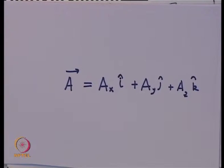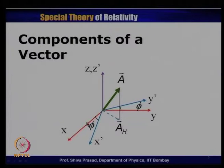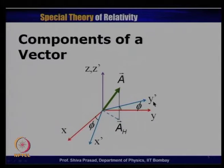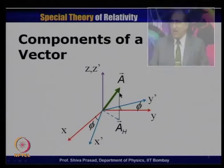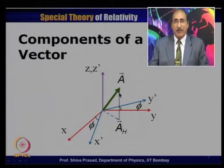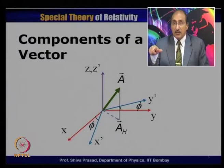If I decide to use the x', y', z' axes instead, the z component remains the same, but the x and y components would change because the direction of x' is different from x, and the direction of y' is different from y. Therefore, the same vector A, which has the same magnitude and points in the same direction, would have different components depending upon which set of axes I choose to describe it.